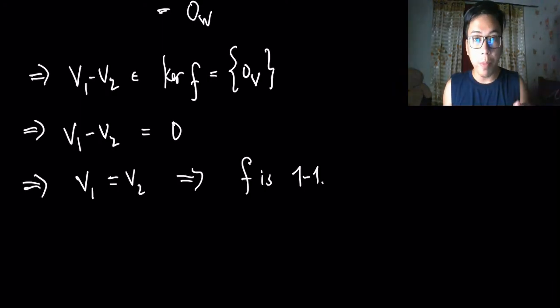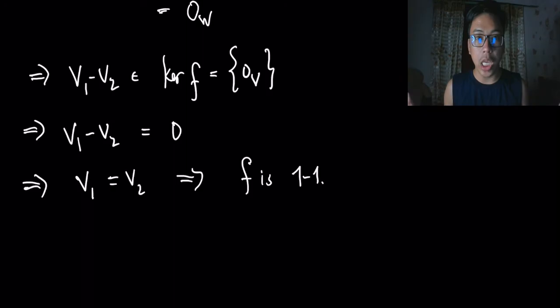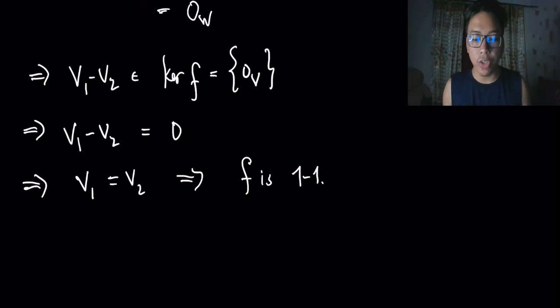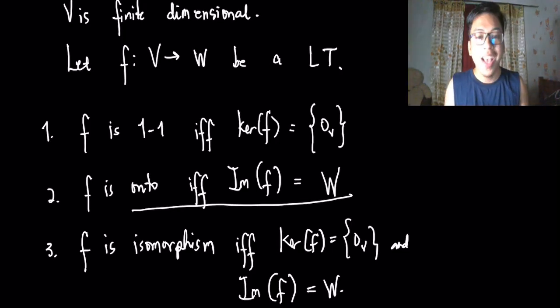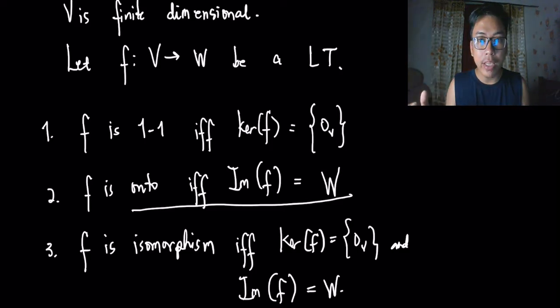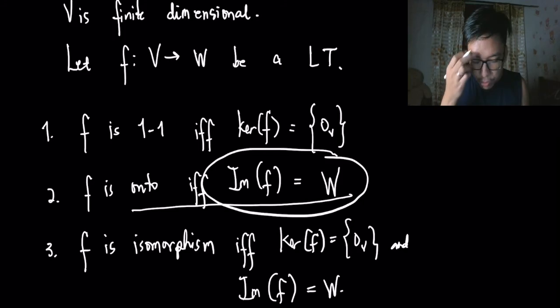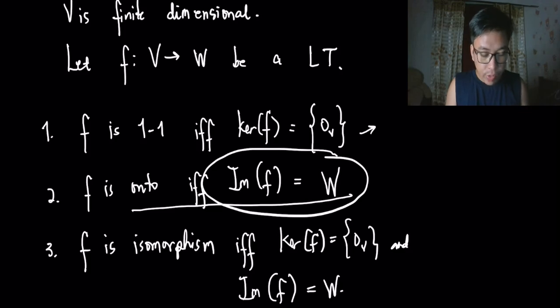If you have any questions or clarifications you can comment below. For number two, this follows directly from the definition of an onto function: the image of f equals the codomain. Since we've proved one and two, number three — which combines both — is automatically true.